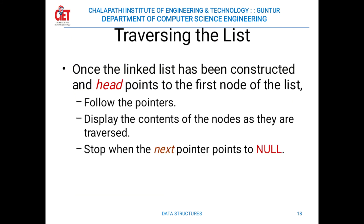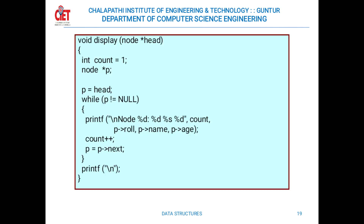Traversing means visiting all elements only once. Once the linked list is constructed and head points to the first node, follow the pointers, display the content of nodes as they are traversed, and stop when the next pointer points to null — which means the end of the list. The pseudocode for traversal displays the content of each node, such as roll number, name, age, etc.